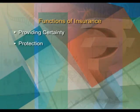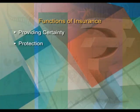The second function of insurance is protection. Insurance cannot stop the happening of a risk or event, but it can compensate for losses arising out of it. The third function is risk sharing. On the happening of a risk event, the loss is shared by all persons exposed to it. The share is obtained from every insured member by way of premiums.